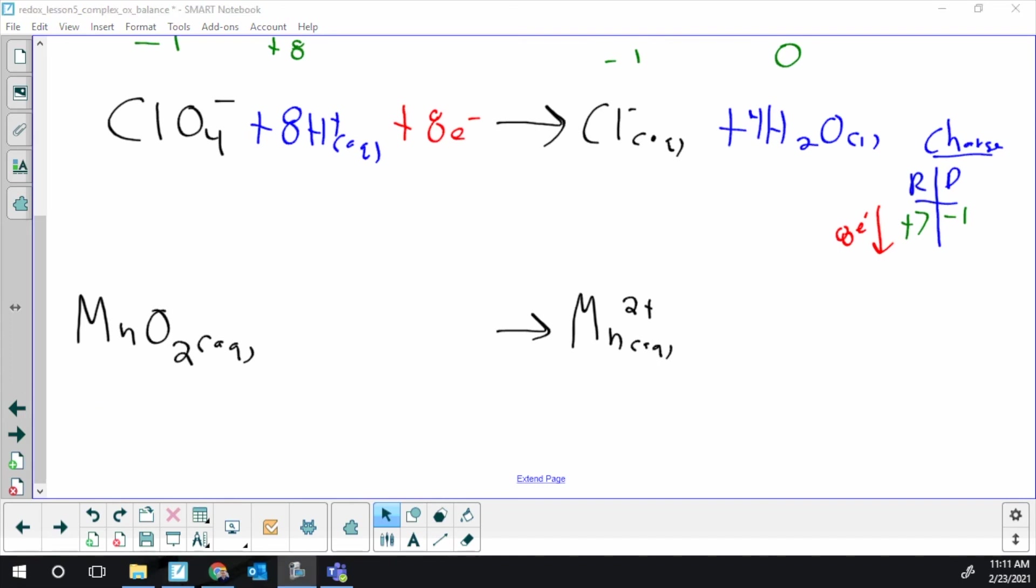So let's see if you got what I got. Started balancing the Mn: one and one, so that's fine. Balance the oxygen with water—there's two O's at the beginning, so I need two water. H+—there's only H+ and hydrogen in the water, so there's two pairs, that's four.